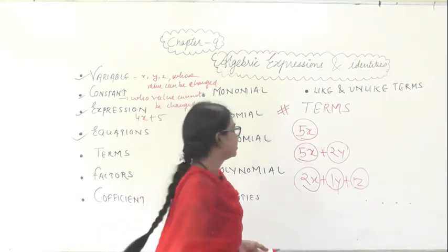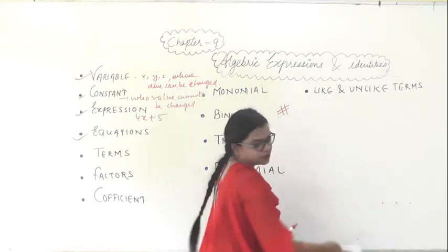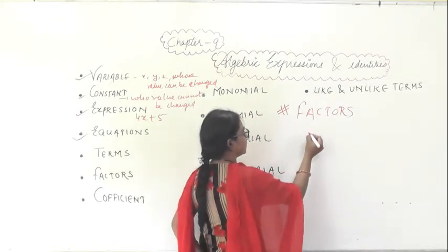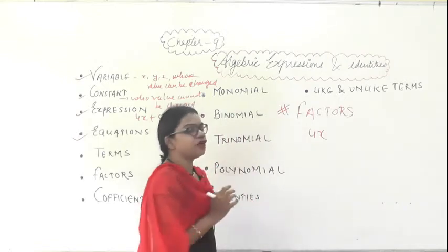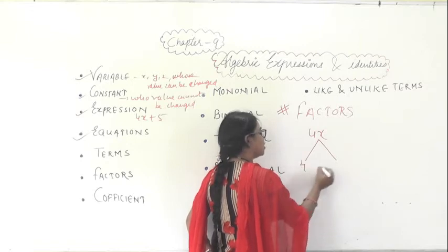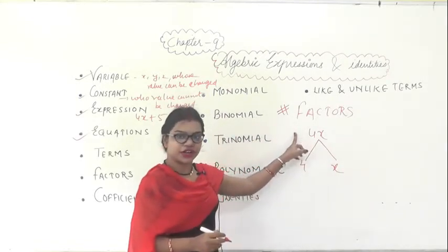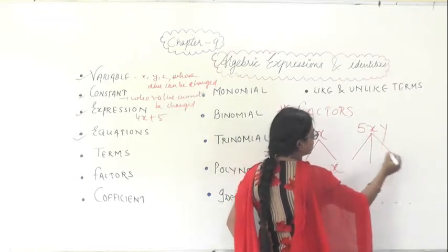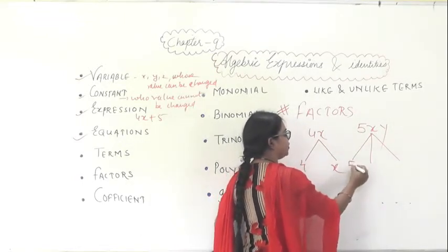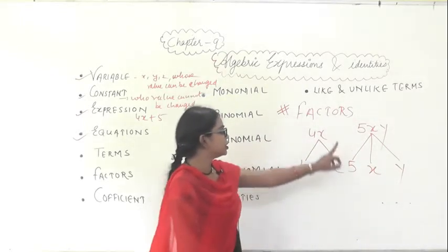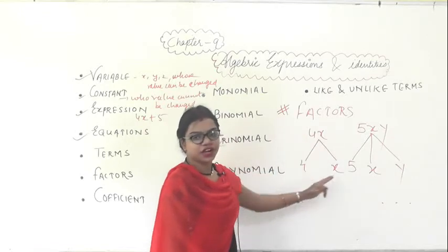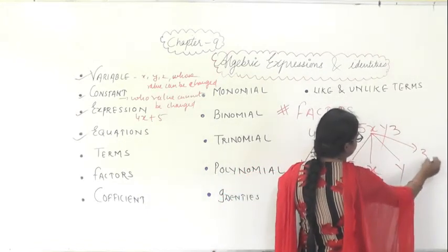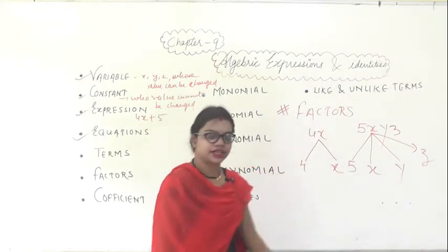The next topic is factors. Suppose I write 4x and I want to find out the factors of 4x. I can write it as 4 and x, so 4 and x are the factors of 4x. Suppose if I write 5xy, the factors are 5, x, and y. The factors of 4x are 4 and x; the factors of 5xy are 5, x, and y. Similarly, if I add one z here, this will be 5xyz and the factors of 5xyz are 5, x, y, and z.